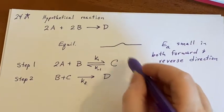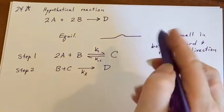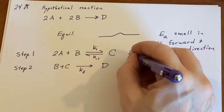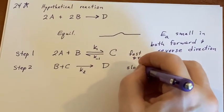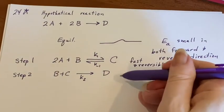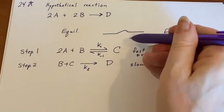If this has such a small EA, then it's probably fast as well as reversible. That leaves this as being the slow step, which means we're going to have to include this in our analysis.